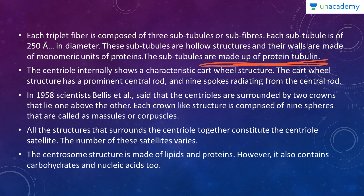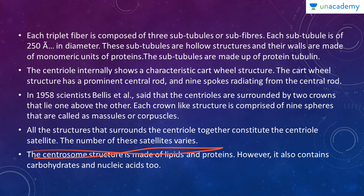In 1958, scientists such as Belli et al. stated that centrioles are surrounded by two crowns lying one above the other. Each crown-like structure is comprised of nine spheres known as macules or corpuscles. All the structures surrounding the centriole together constitute the centriole satellite, and the number of these satellites varies. The centrosome structure is made up of lipids and proteins, but also contains some carbohydrates and nucleic acids.